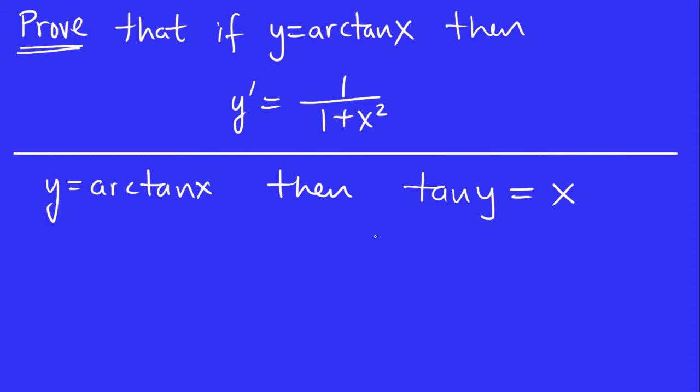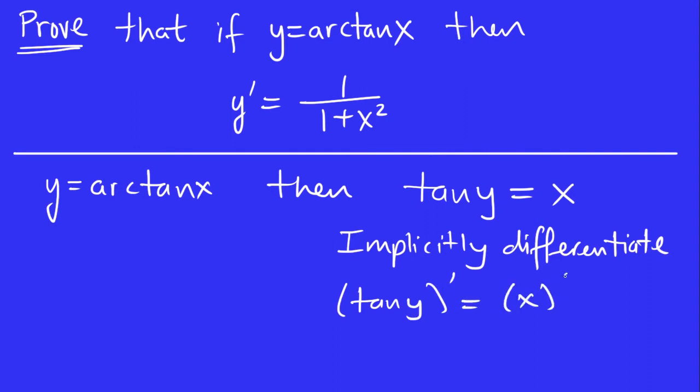Now, let's implicitly differentiate this. So we just take the derivative of both sides with respect to x. The derivative of tan y is, well, the derivative of tan x is secant squared x. So by the rules for implicit differentiation, the derivative of tan y would be secant squared y. But then right afterwards, we multiply by y prime. And the derivative of x is 1, right?